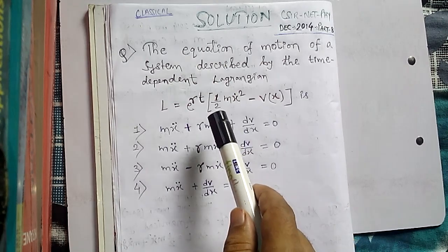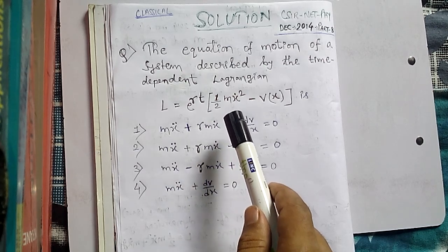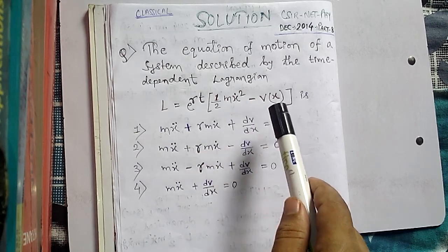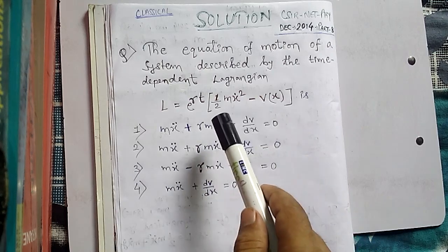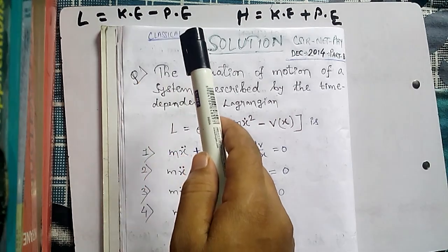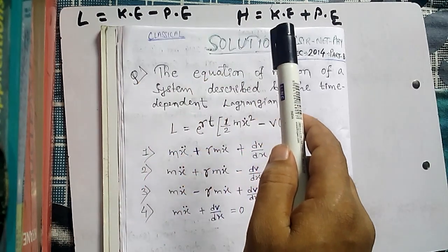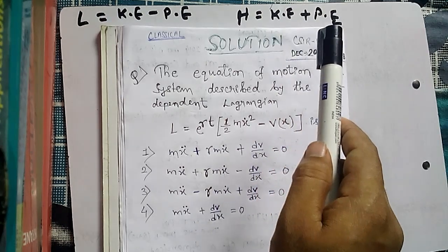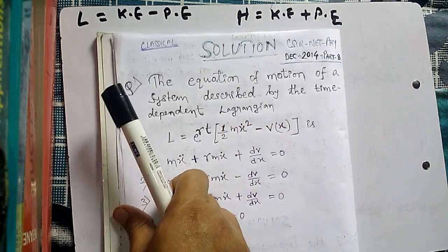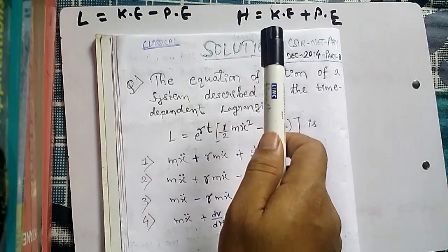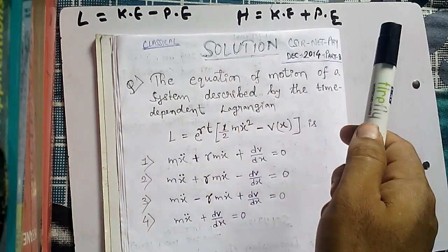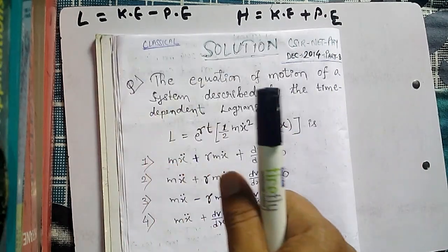Notice that half m x-dot squared is the same as half m v squared — this is the kinetic energy term, and V(x) is the potential energy term. The Lagrangian is always kinetic energy minus potential energy. On the other hand, the Hamiltonian is always kinetic energy plus potential energy, which is why H is also called the total energy. These relations are not needed for our current problem but are shared for the sake of knowledge.